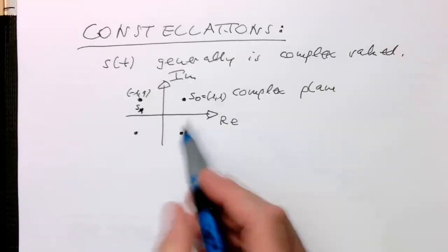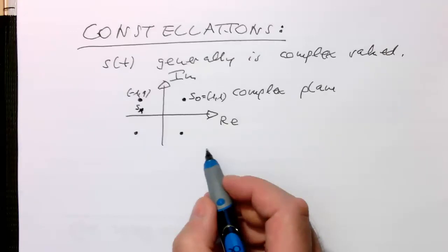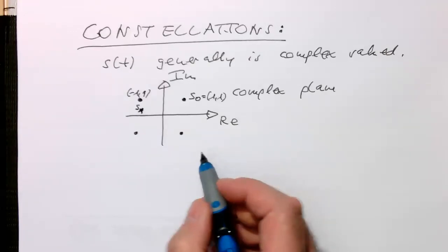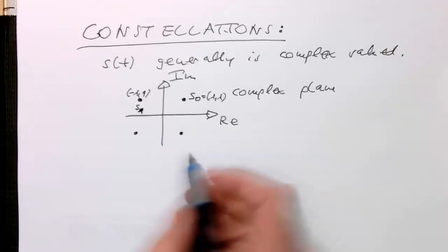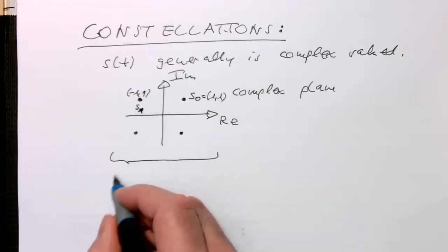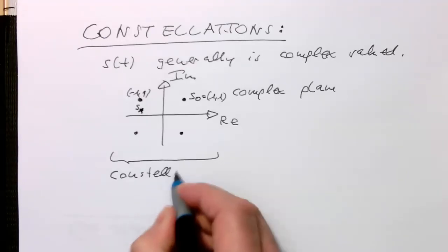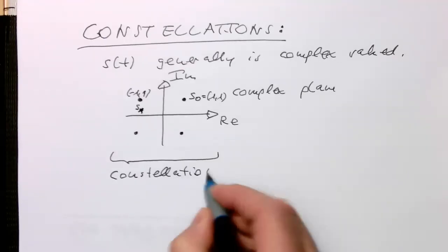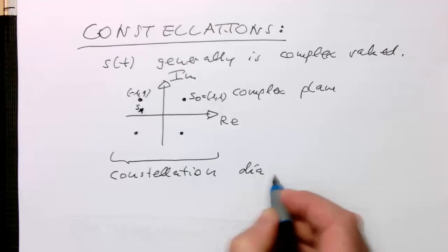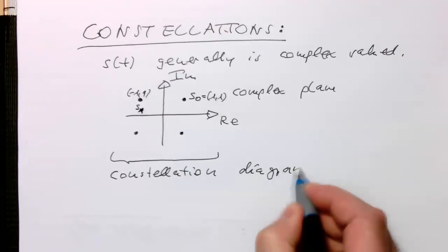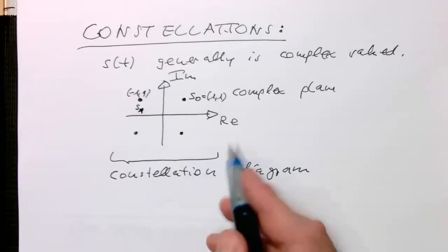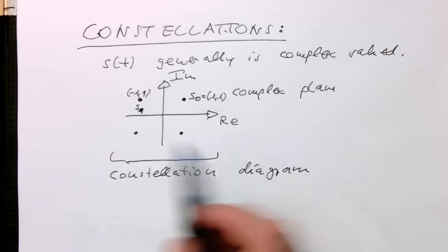And so with that, we can describe this here in the complex plane. And a diagram like this one here is called a constellation diagram. It's a very convenient way of describing how symbols are transmitted.